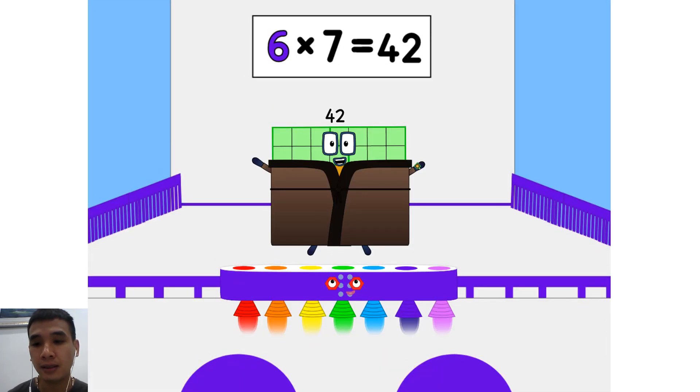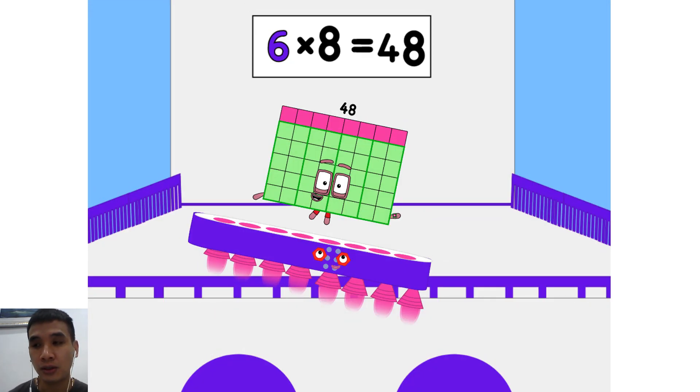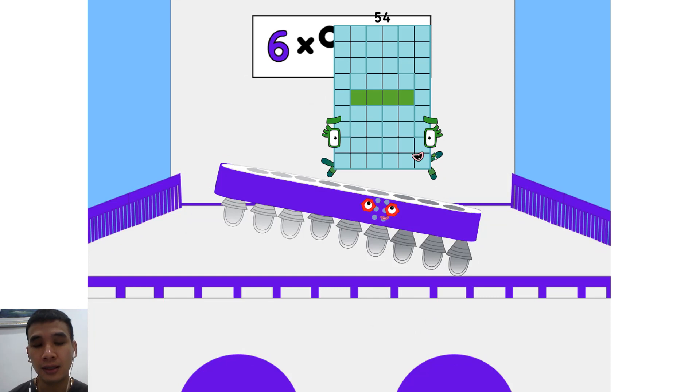One five is five. Two fives are ten. Three fives are fifteen. Trust me, you'll go far. Four fives are twenty. Five fives are twenty-five. Six fives are thirty. You know who we are.